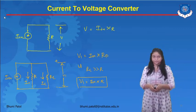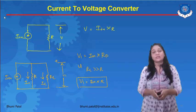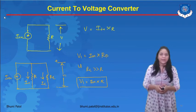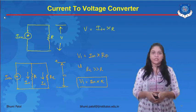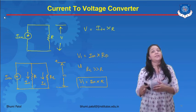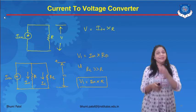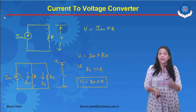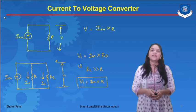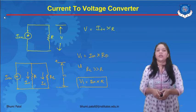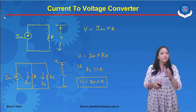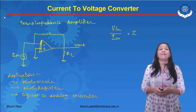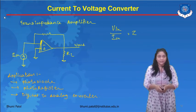For the passive circuit, the input current is applied and resistance is connected. Applying Ohm's law, V equals I times R. When a load resistance RL is also connected, V1 equals I-in times R-parallel, where R-parallel is R and RL in parallel. If the load resistance is much larger than R, then V1 equals I-in times R, meaning the output voltage V1 is directly proportional to the input current. This is the trans-impedance amplifier for the current to voltage converter.